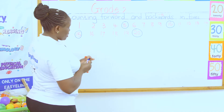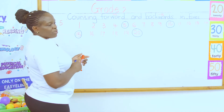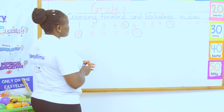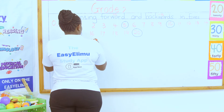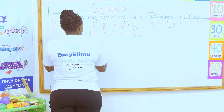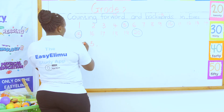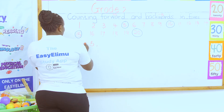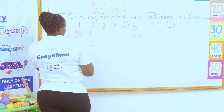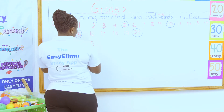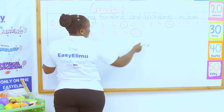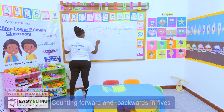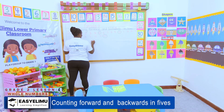What have you realized about our numbers when we count in fives? If this number has a five — for example, the first number has a five — then the next number will have a zero. If it has a zero, the next number will have a five.